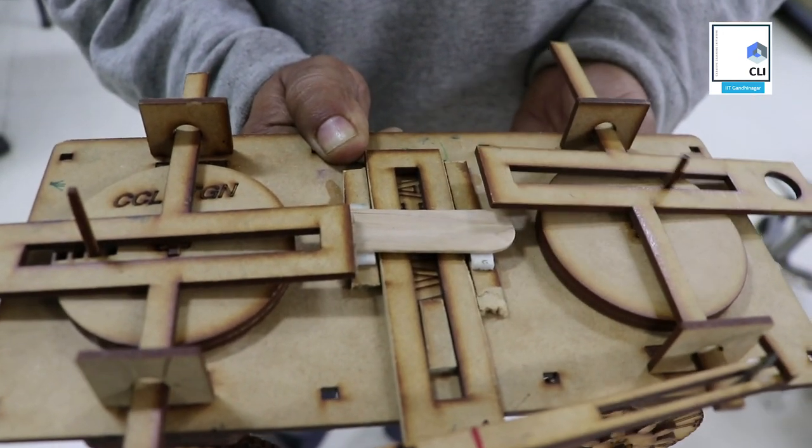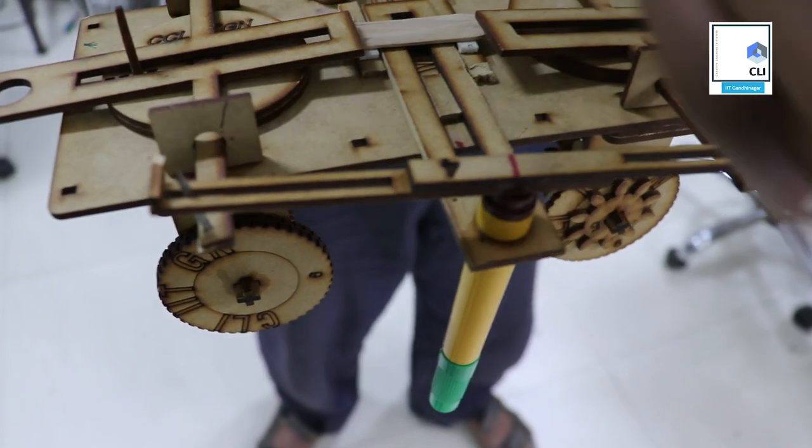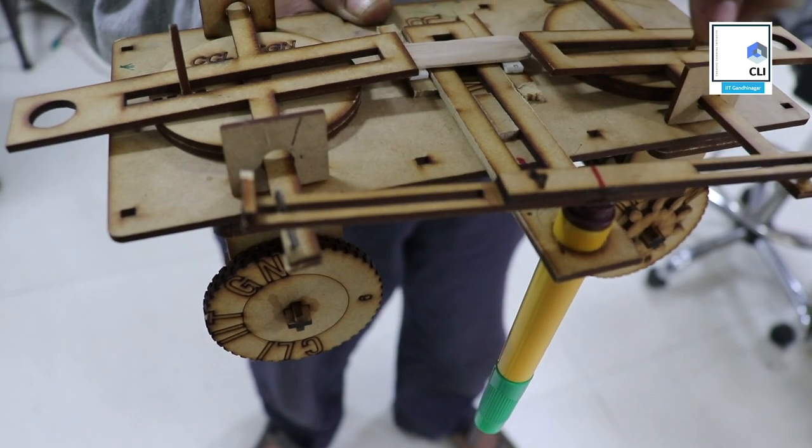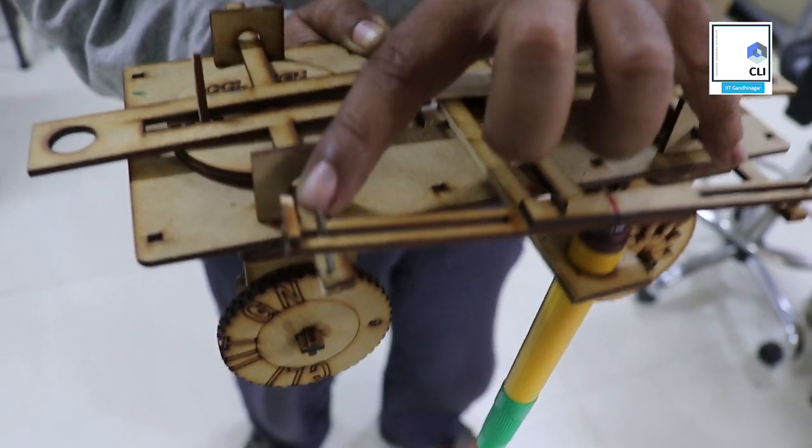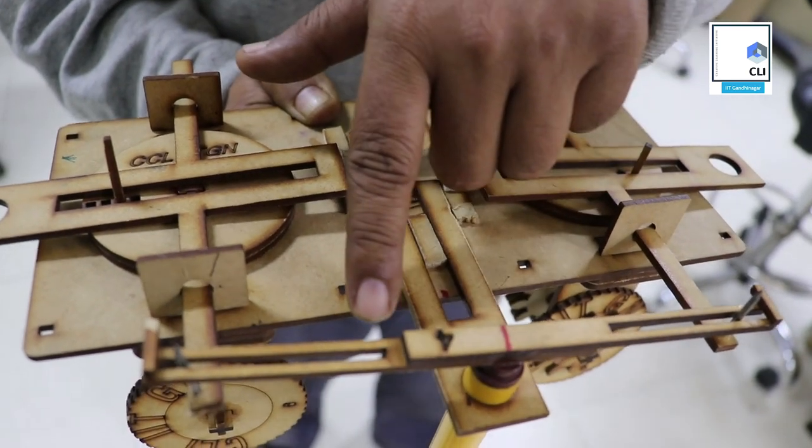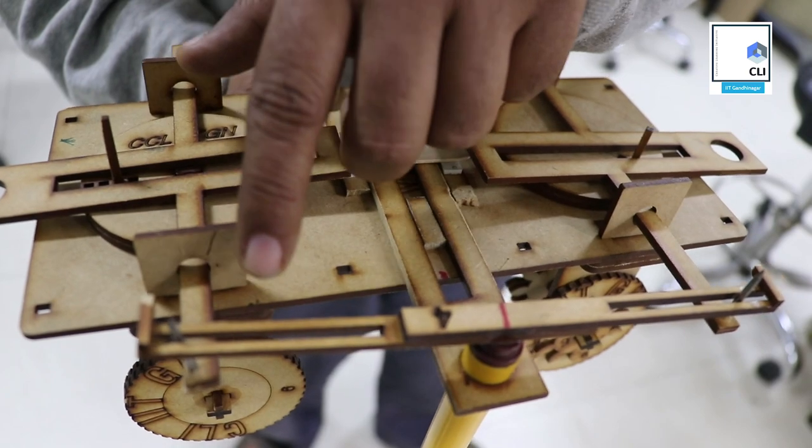But the pen which is stuck in the middle and moves perpendicular to the movement of the car will draw the average of these two sticks because it's stuck in the middle. If this pen were to be closer to this stick, the coefficient of the movement of this stick will be smaller.